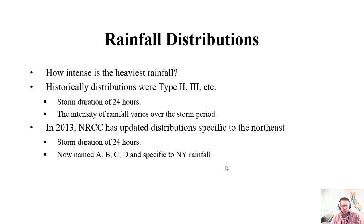Now let's talk about rainfall distributions. We're trying to figure out how much runoff runs off a site, so we need to know how intense the heaviest rainfall is, since that produces the greatest flow rates for our BMPs. Historically, we used synthetic rainfall distributions called Type 2, Type 3, etc., with a 24-hour storm duration. In 2013, the Northeast Regional Climate Center updated rainfall distributions for the Northeast US. We should now be using the new rainfall distributions Type A, B, C, and D, which are also 24-hour storms.